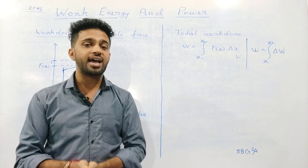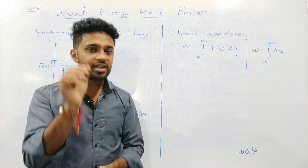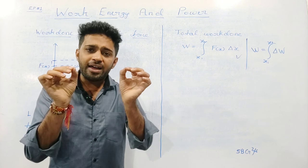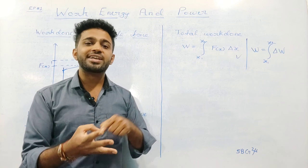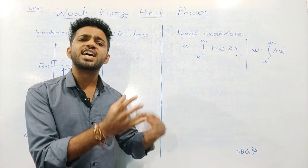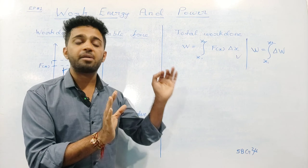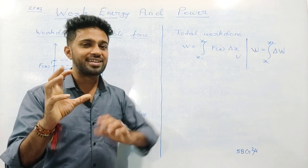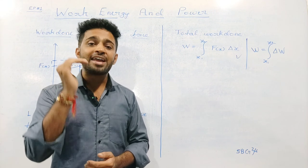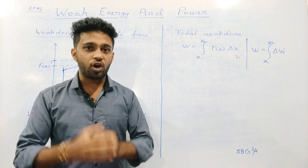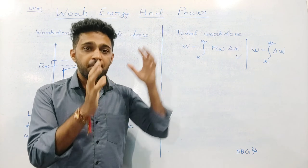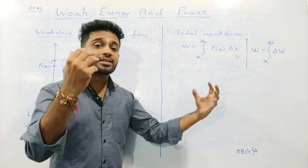The next concept is energy. What is energy? Energy is the capacity of doing work. There are different forms of energy: potential energy, kinetic energy, nuclear energy, wind energy, and more. The law of conservation of energy states that energy can neither be created nor be destroyed, but can be transferred from one body to another body, or transformed from one form to another form.